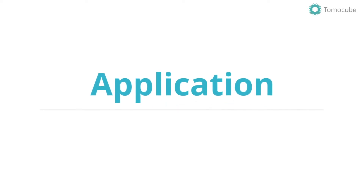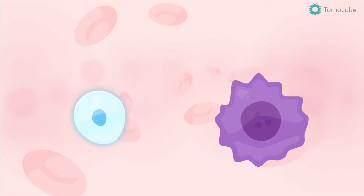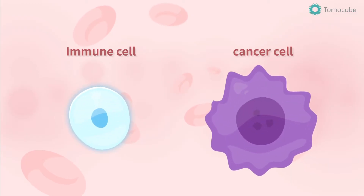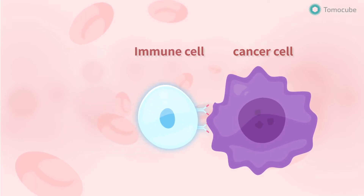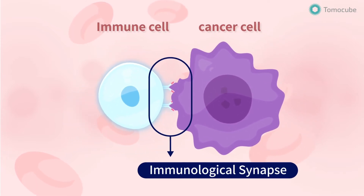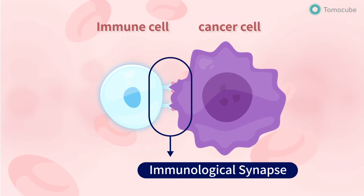This video summarizes TomoCube's application note on cell-to-cell interaction in the immune response. When a harmful pathogen or a cancer cell attacks our bodies, the immune system detects and activates an immune response in order to eliminate the target. One of the most essential and dynamic immune reactions is the activation of lymphocytes, which recognize targets via a receptor-ligand interaction and form an immunological synapse.